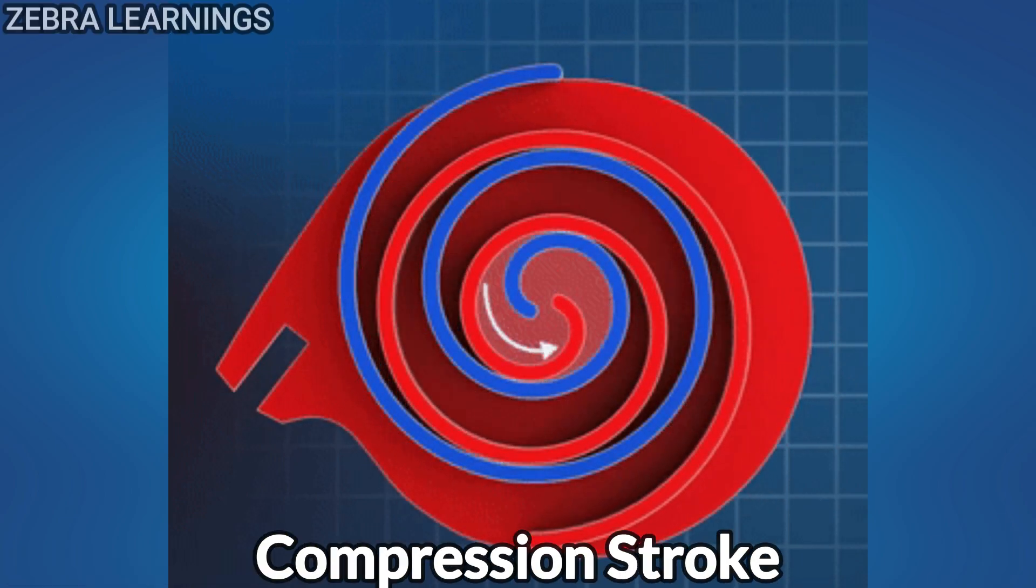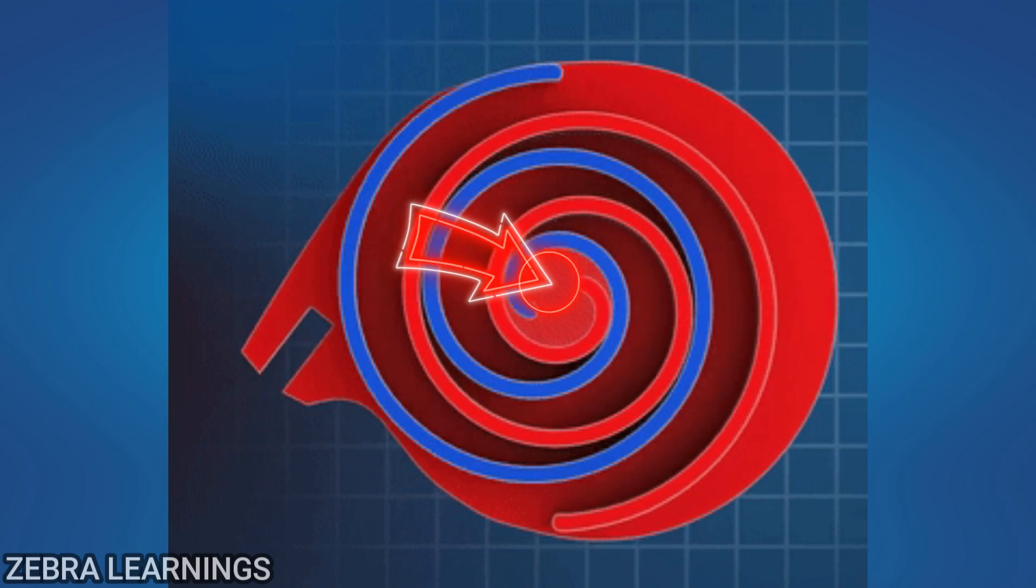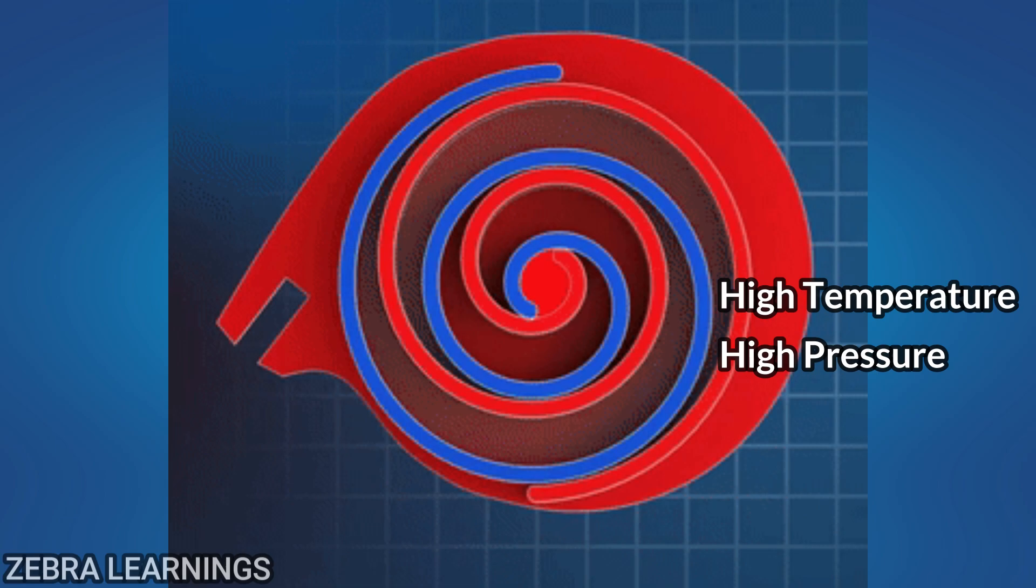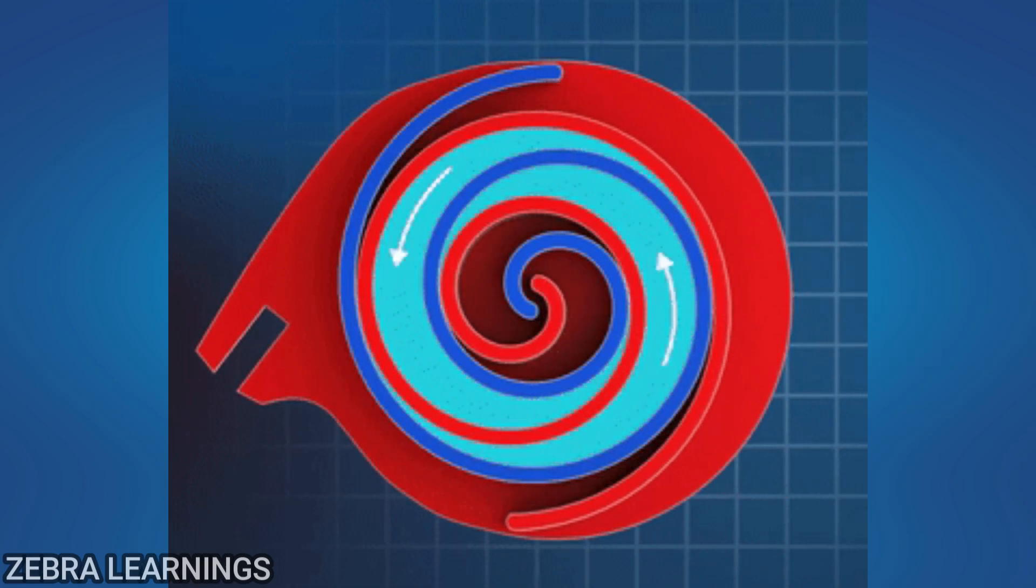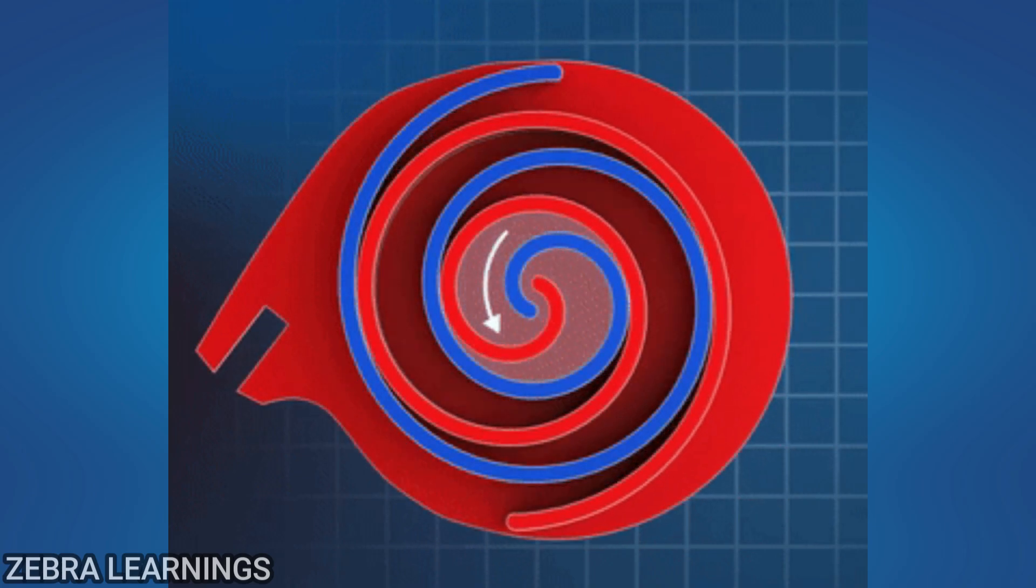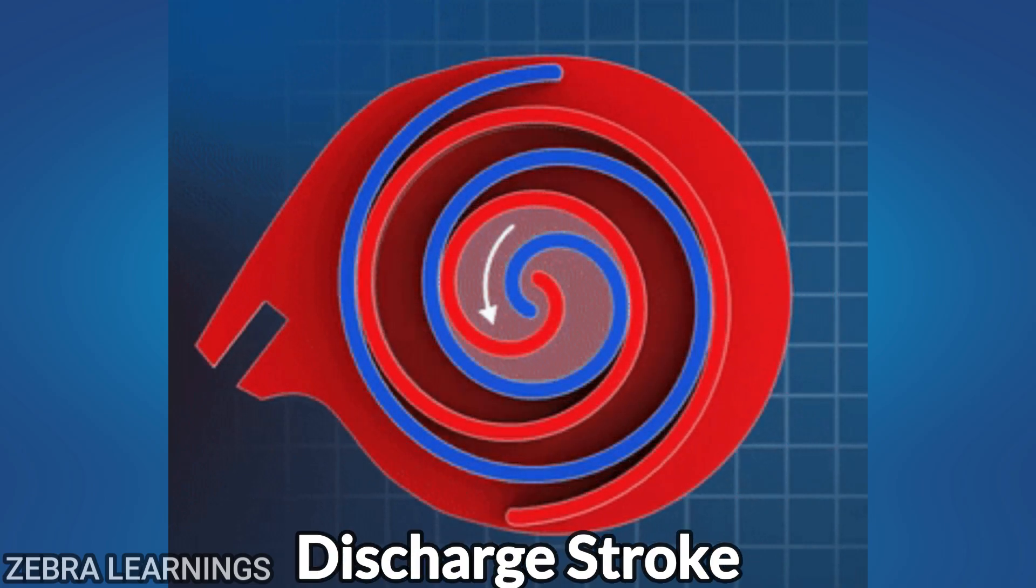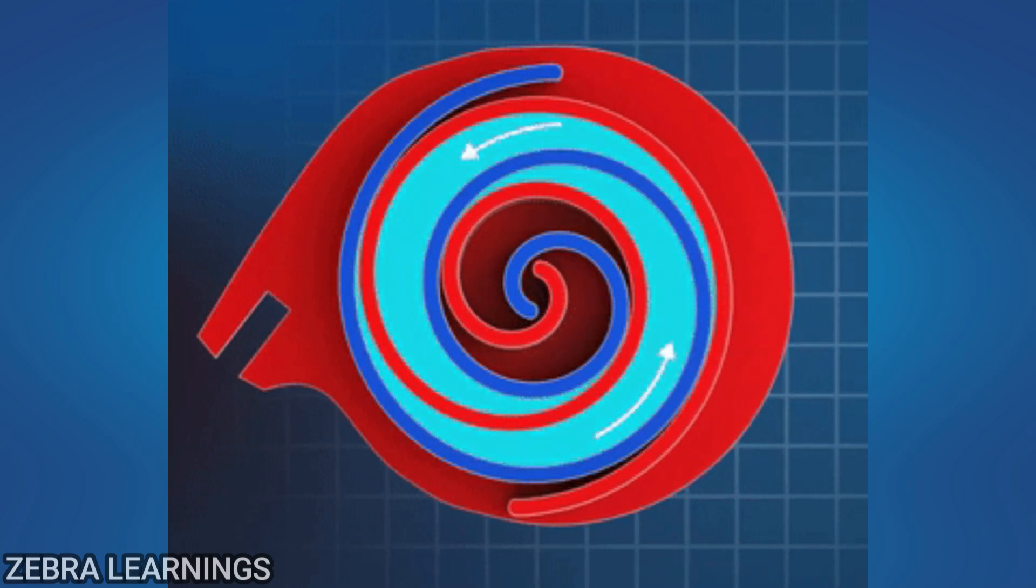Once the refrigerant is fully compressed, it reaches the center of the scrolls. Now at high temperature and high pressure, it gets discharged through the center outlet and moves on to the condenser. This is known as the discharge stroke. These are the three main strokes of the scroll compressor.